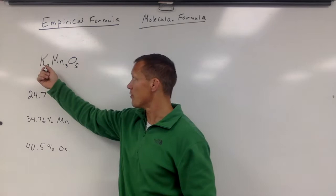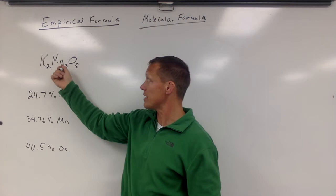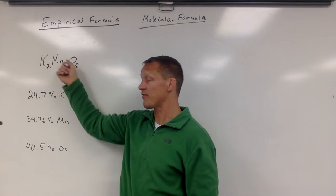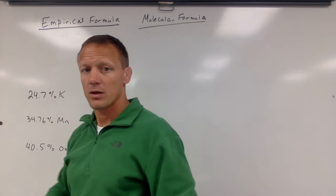So remember, the numbers in here are number of atoms or moles of atoms. So for every two moles of potassium, there's three moles of manganese, five moles of oxygen. But these are not grams. It's not two grams to three grams to five grams, because every element's got a different mass in terms of their moles.